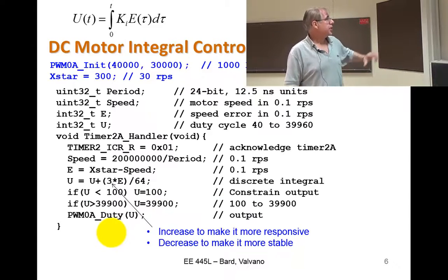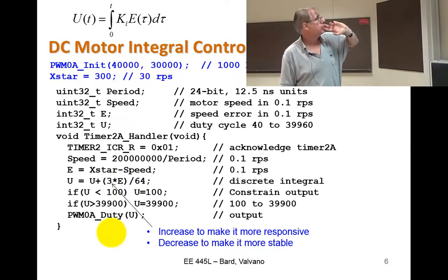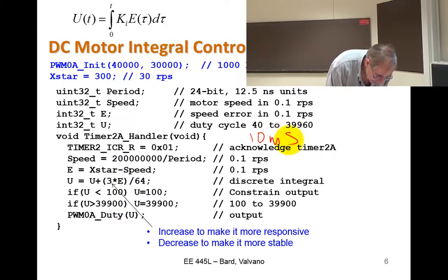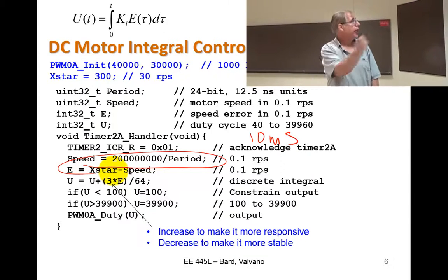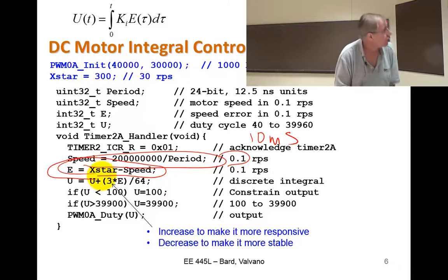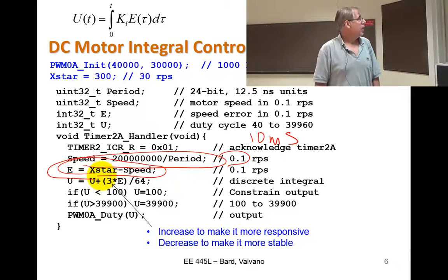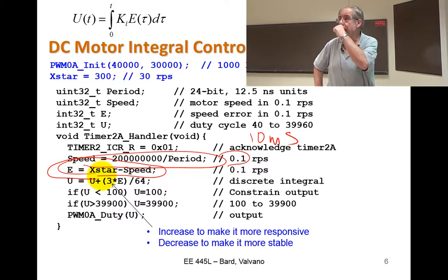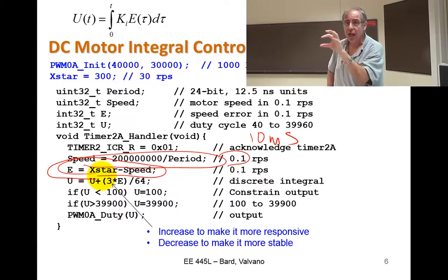There's my actual code. This is the controller running at 10 milliseconds. This is the equation I did last time that converts the period measurement into a speed in RPS, or at least a speed in 0.1 RPS. There is the definition of a controller error, which is the difference between E star and measured speed. Why do these globals, why aren't they not static locals? I made them global so I can put them in the watch window of the debugger and watch them.